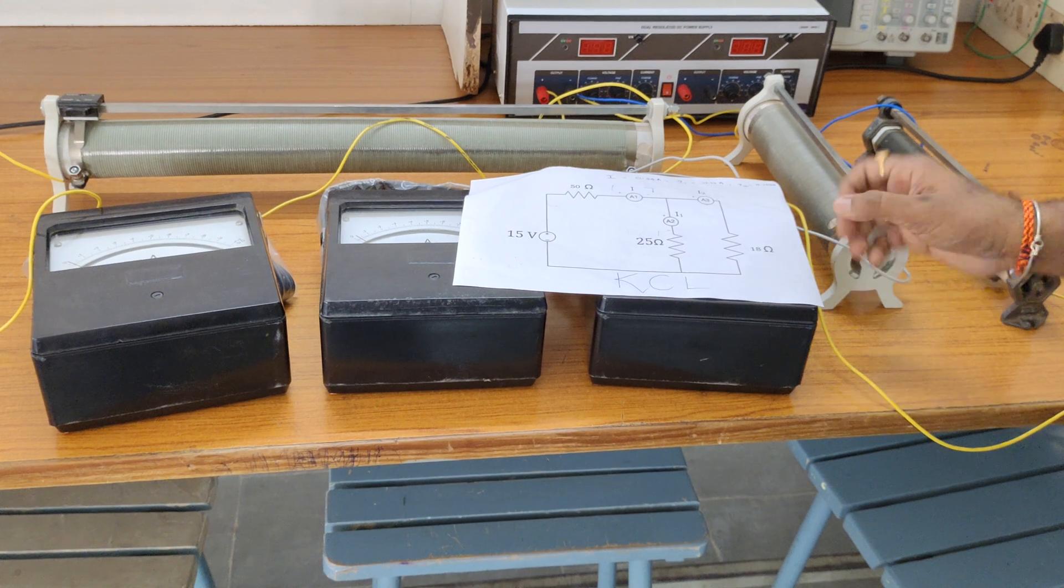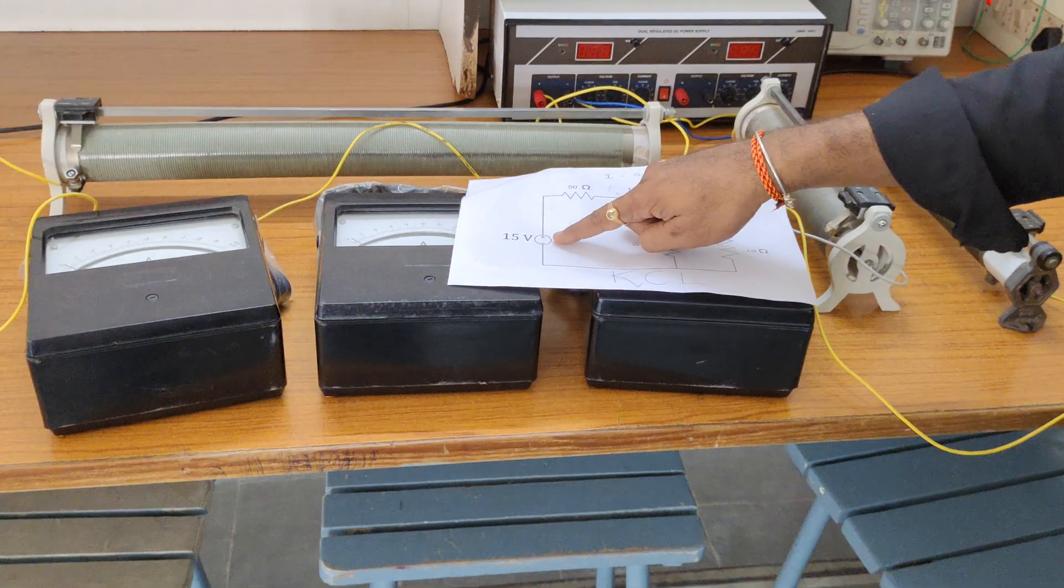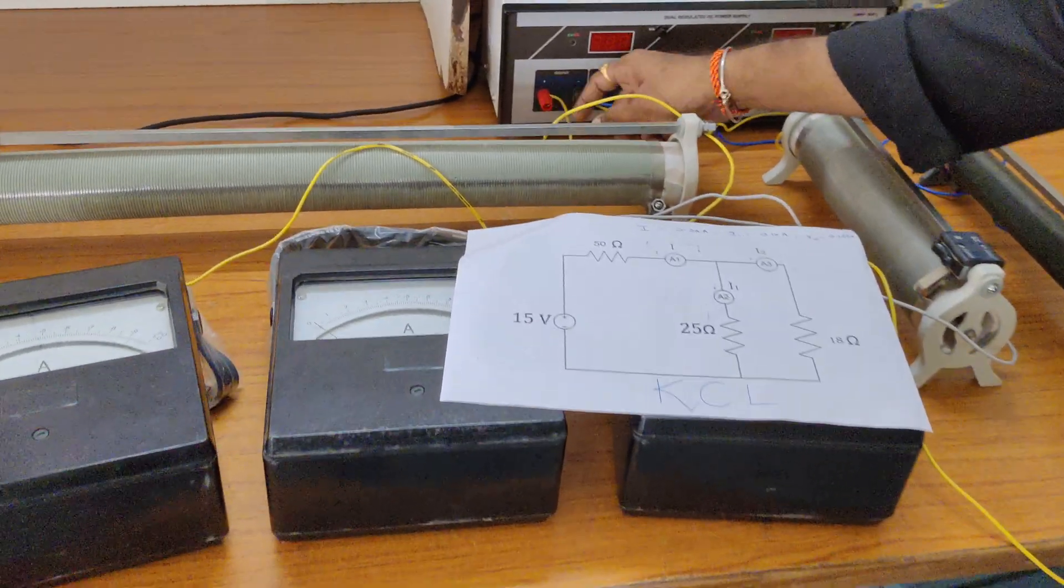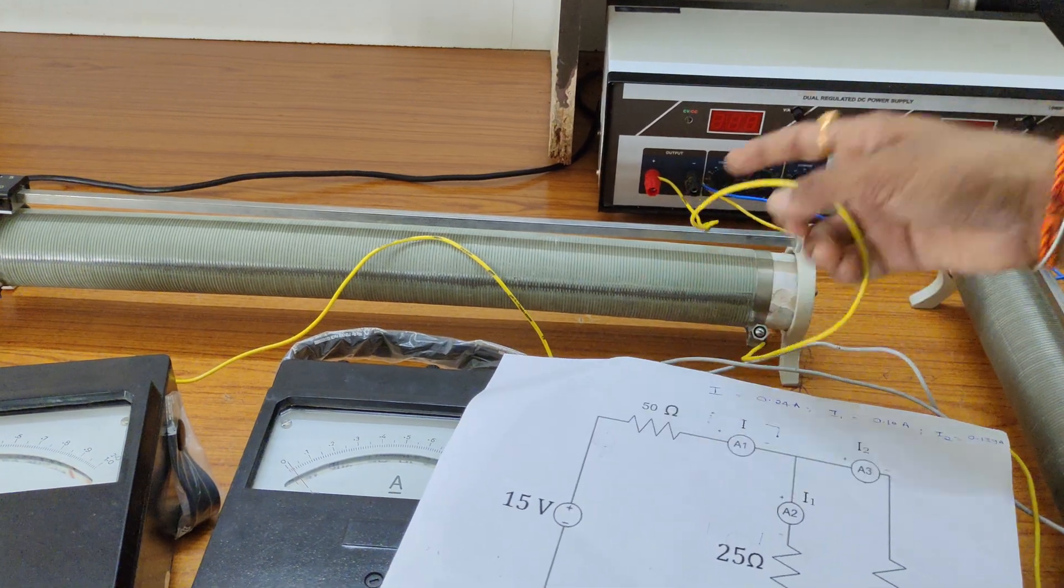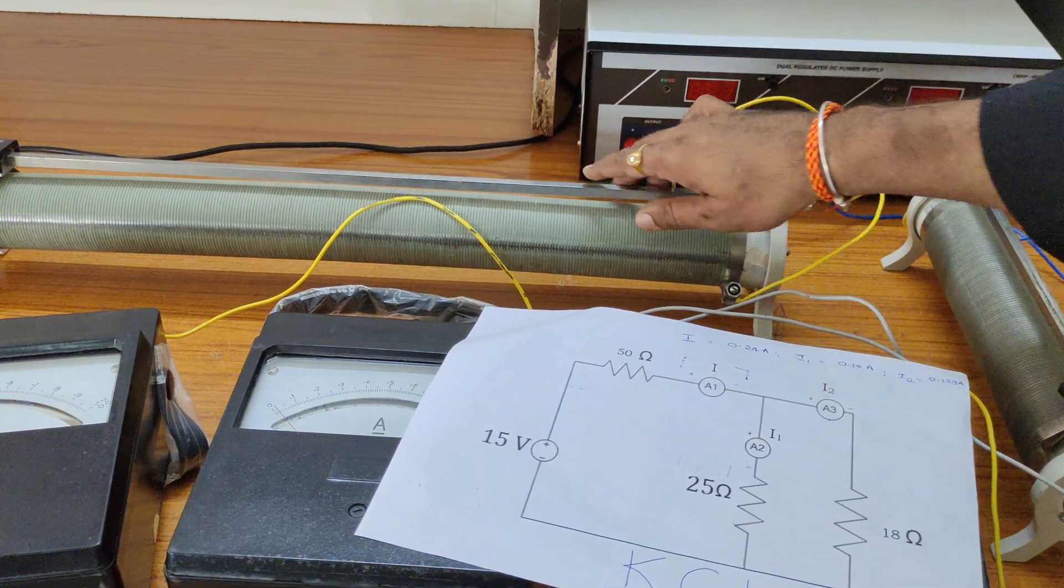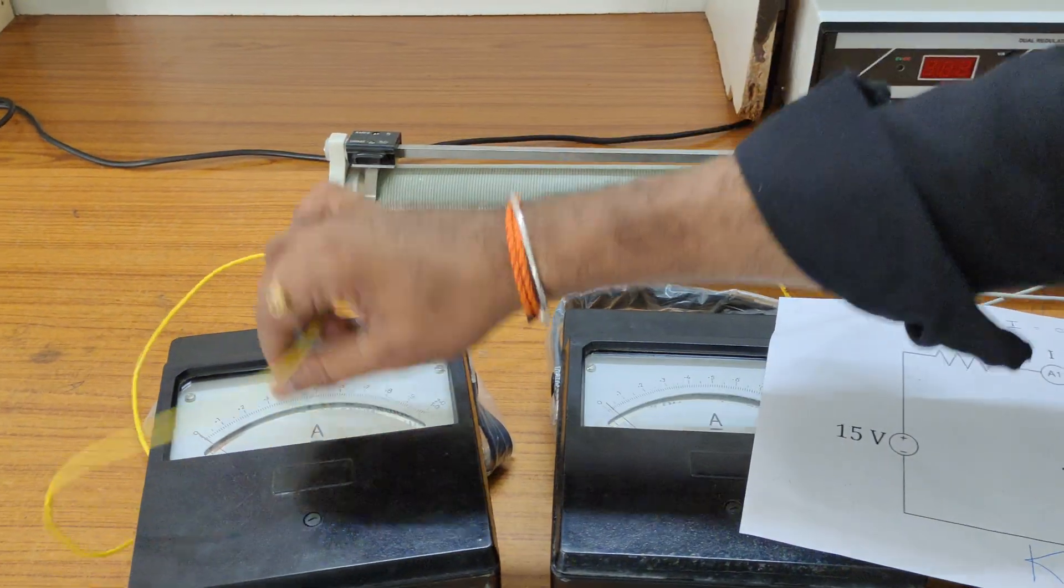Observe, from the RPS we are applying 15 volts. The RPS positive terminal is connected to one end of the 50 ohm resistor. The 50 ohm resistor's other end is connected to the first ammeter here.